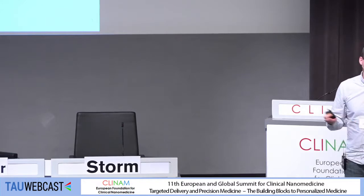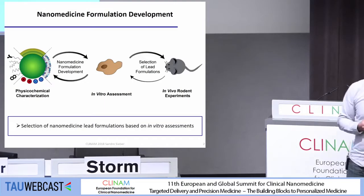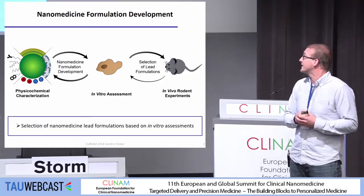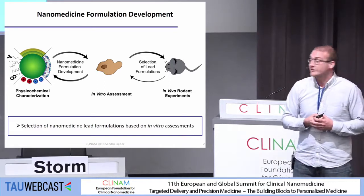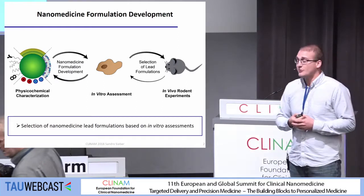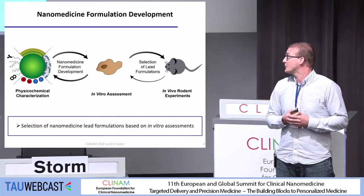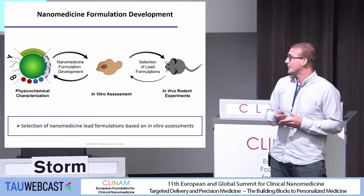Nanomedicine development follows a certain process which involves formulation design and optimization, including physicochemical characterization, in vitro assessment regarding cell specificity, cell uptake, or toxicity. Then some formulations are selected and taken further into rodent in vivo trials. There is a huge gap between in vitro assessments and rodent in vivo trials, especially if you would like to look at dynamic processes like pharmacokinetics or biodistribution, which involve the presence of blood proteins or dynamic blood flow conditions.